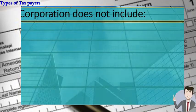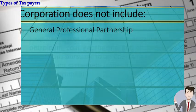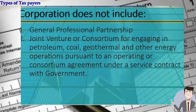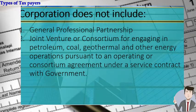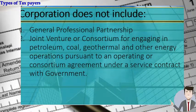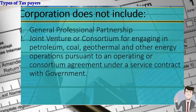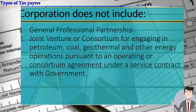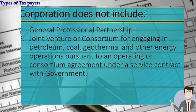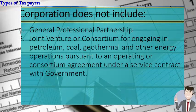For tax purposes, a corporation does not include a general professional partnership. It also does not include a joint venture or consortium for engaging in petroleum, coal, geothermal, and other energy operations pursuant to an operating or consortium agreement under a service contract with the government. A joint venture means two individuals agreeing to combine their resources, facilities, and assets for a single goal or venture.